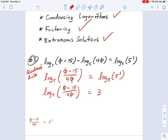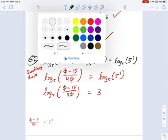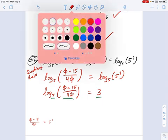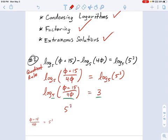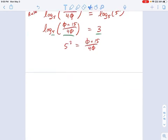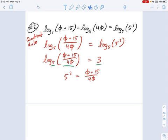Well, now you would convert it to exponential form, and just walk through how you do that. You say 5 to the 3 equals the argument. So in this case, it's going to be 5 cubed, 5 to the 3 equals the argument, 5 plus 15 over 4φ. And you can see this is exactly what I have over here. That's this guy, which we don't need anymore.